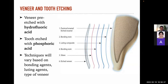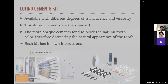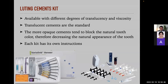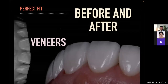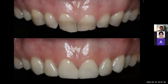Techniques will vary based on bonding agents, luting agents, and type of veneer. Luting cements are available with different degrees of translucency and viscosity. Translucent cements are the standard — more opaque cements tend to block the natural tooth color, decreasing the natural appearance of the tooth. Each kit has its own instructions. I use Variolink Veneers; those cements are really good. And here are a couple of before-and-after cases: tetracycline stains with composite veneer on top, a central incisor with discoloration, tooth wear — the patient definitely had bruxism — and a re-restored Class IV restoration on tooth number eight central incisor.